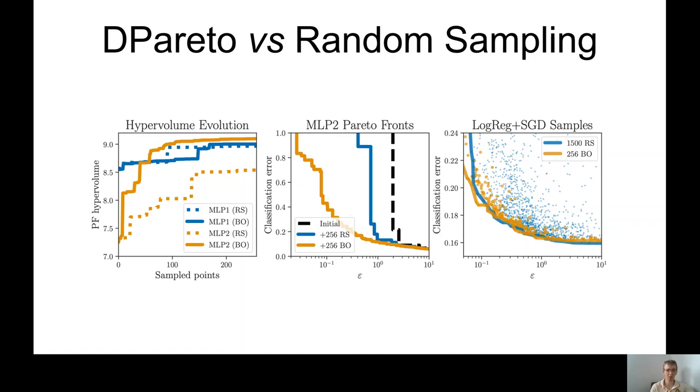But as you can see on the middle plot, on the exact same budget, DPareto recovers a much better frontier than random sampling. Here in the middle plot, both approaches were given budget of 256 evaluations. Now, on the rightmost plot, we gave random sampling a much bigger budget, 1500 evaluations, and the budget for DPareto remains the same. And you can see the two frontiers here look pretty much the same.